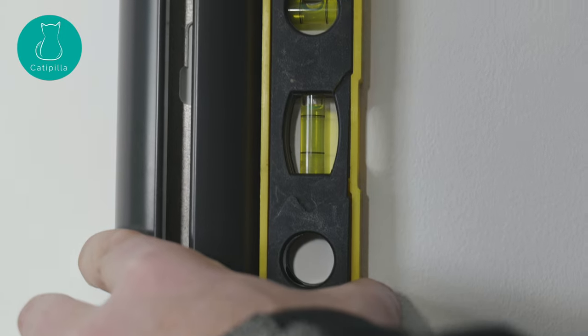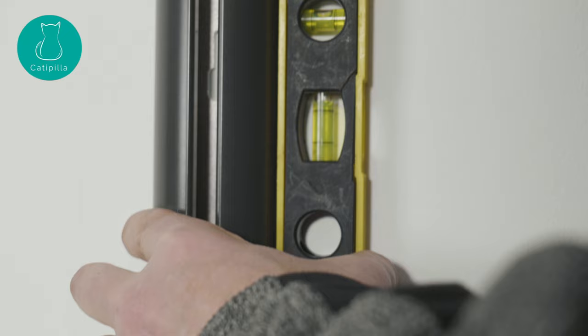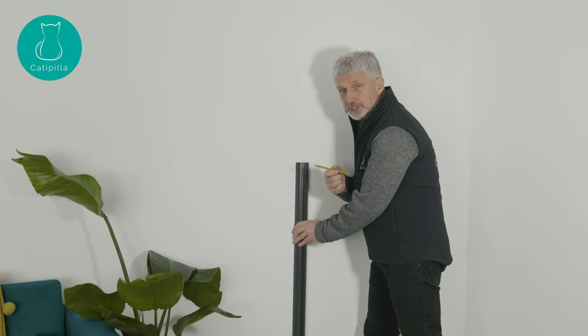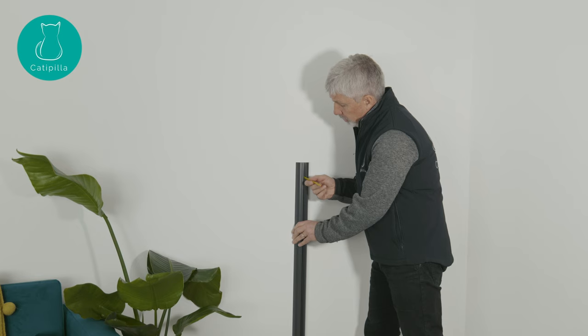Once you've worked out where in the home you want your climber to be, place the pillar against the wall and make sure it's vertical using a spirit level. Using a pencil, mark on the wall at the top of the slot at both the top and bottom of the pillar.